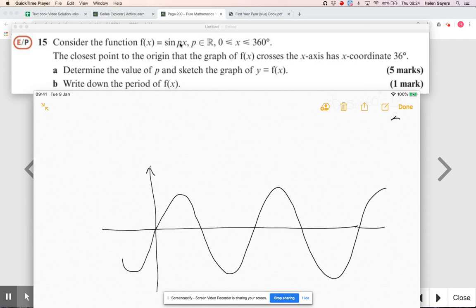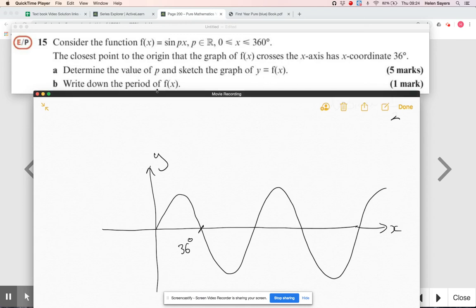It's set from zero to 360, so I probably haven't sketched from zero to 360 there, but I'm just trying to get my head around what this graph is going to look like. They're saying that that coordinate there is 36 degrees. Then they're asking me to determine the value of p and sketch the graph. I suspect now I haven't left myself enough space to actually draw the full graph from zero to 360.